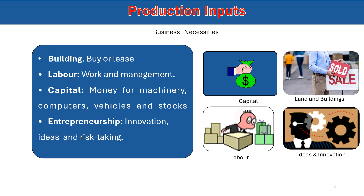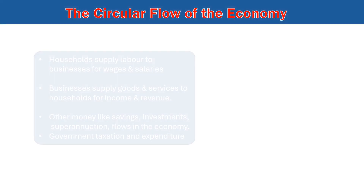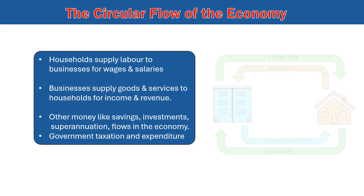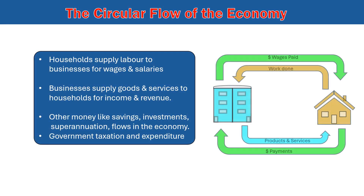This illustration shows how the economy operates in a circular flow. Households supply labor and consume goods, businesses provide jobs and produce goods, and money circulates through these interactions, connecting all players.